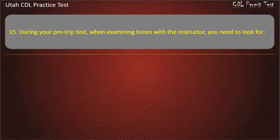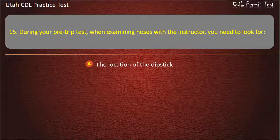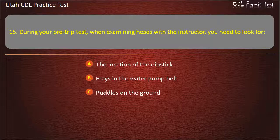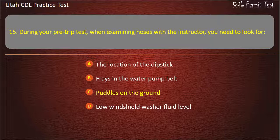Question 15. During your pre-trip test, when examining hoses with the instructor, you need to look for: The location of the dipstick. Frays in the water pump belt. Puddles on the ground. Low windshield washer fluid level. Answer: Puddles on the ground.